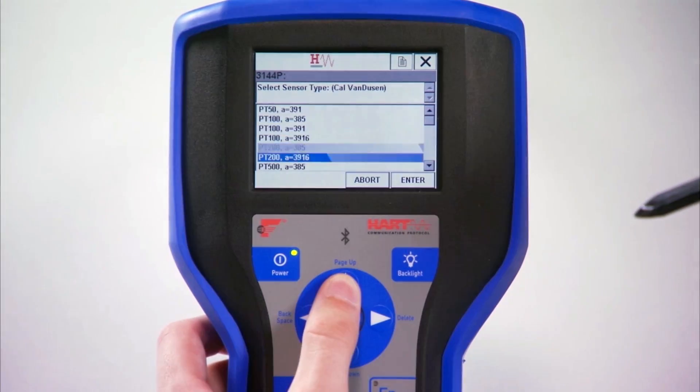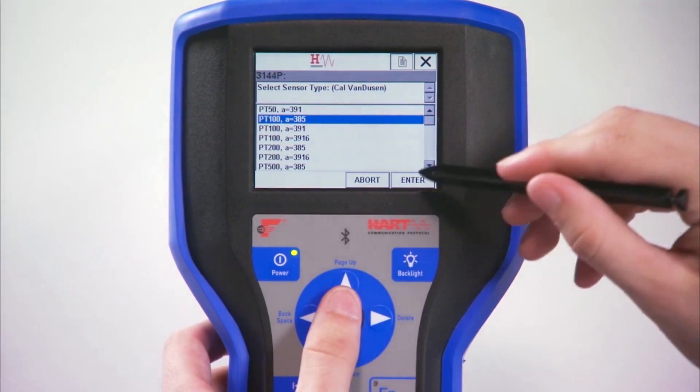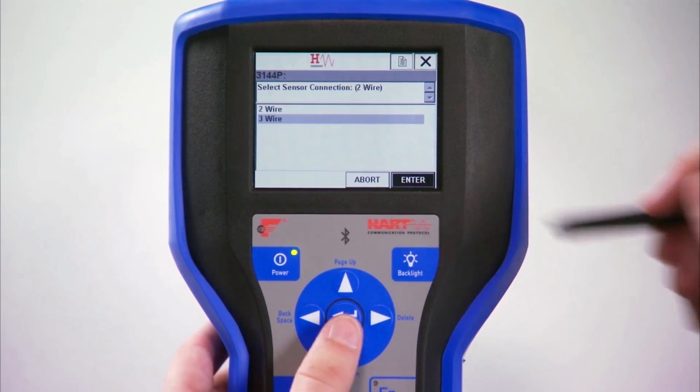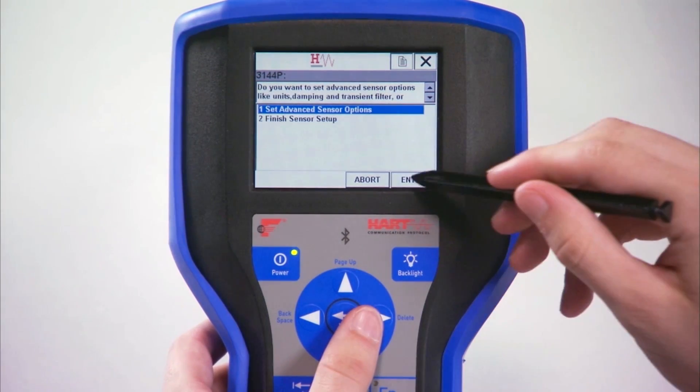Scroll through the list to find the sensor type of your attached sensor and press Enter. If you selected an RTD, choose the correct number of wires and press Enter. Press Enter again to continue the configuration.